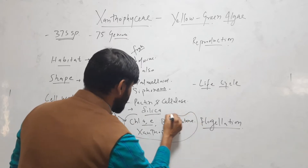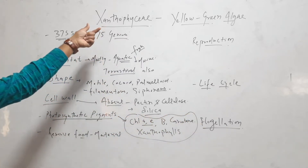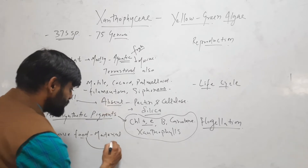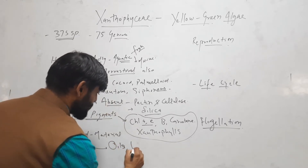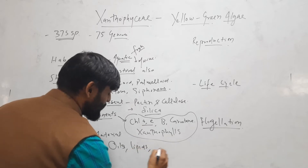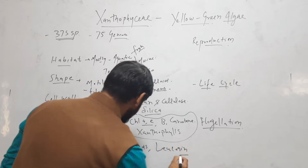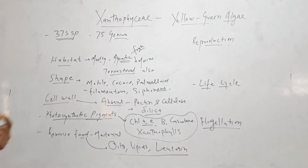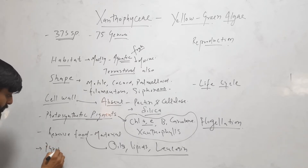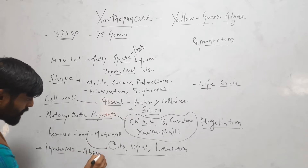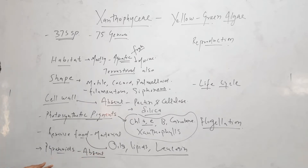The reserved food materials are oils, lipids, and leucosin. These are the reserved food materials found in Xanthophyceae. Pyrenoids are absent in Xanthophyceae; if they are present, then they are without starch.